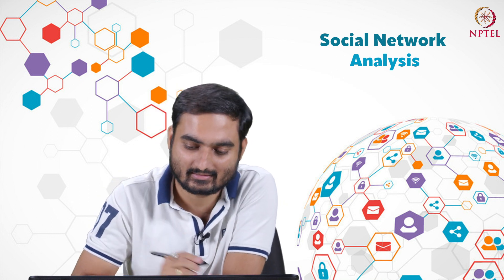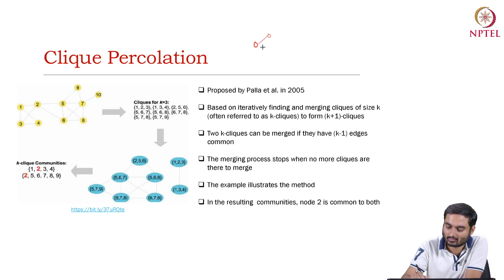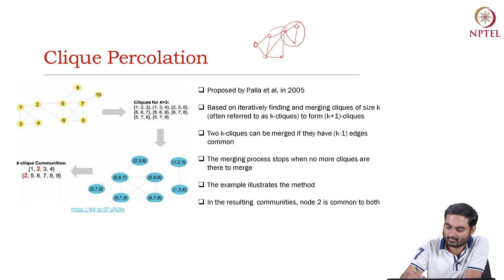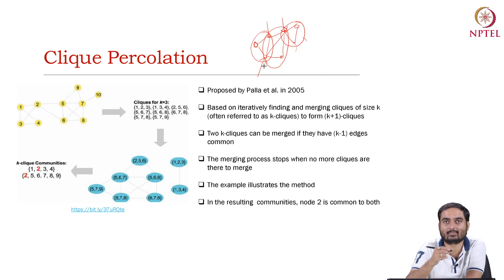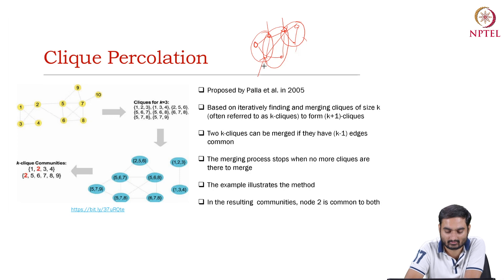What are overlapping communities? We already discussed this. In overlapping communities, a node can be a part of multiple communities. For example, if you think of this as a network, this can be one community, this can be another community, this can be another community. You see that this node belongs to two communities, these two nodes also belong to two communities. We also mentioned that overlapping community detection is even more difficult than disjoint community detection because of the exponential number of possible solutions.